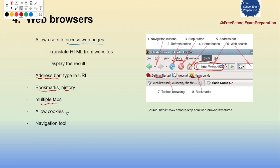Browsers also allow cookies — we'll talk about cookies at the end of today's lecture. Finally, there are navigation tools: one button goes back to the previously visited page, and another goes forward. Web browsers can translate the HTML from websites and display the results to users — we'll look at this in a moment.